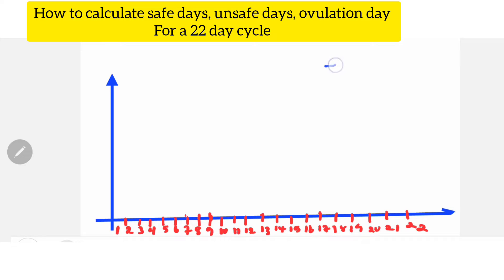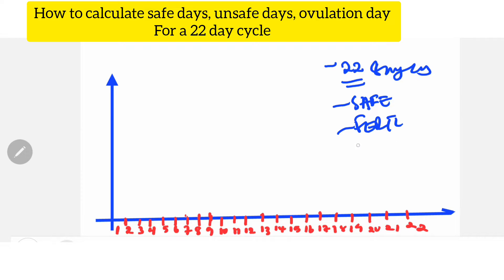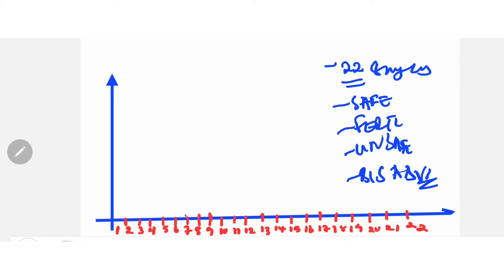In this video, I'm showing you how to calculate, for a 22-day cycle, how to get your safe days, fertile days, and unsafe days. I also give you the disadvantages of having a 22-day cycle. To get started, the first thing you want to do is determine the ovulation date. To get the ovulation date, you take the length of the cycle — in this scenario, 22 days.